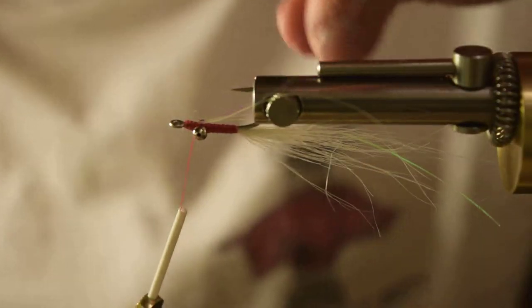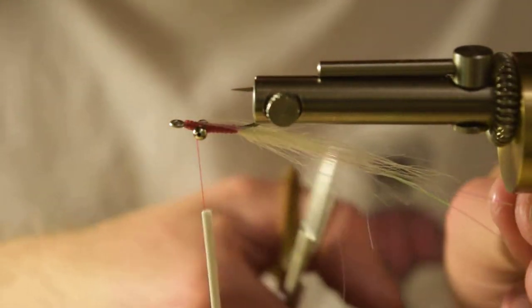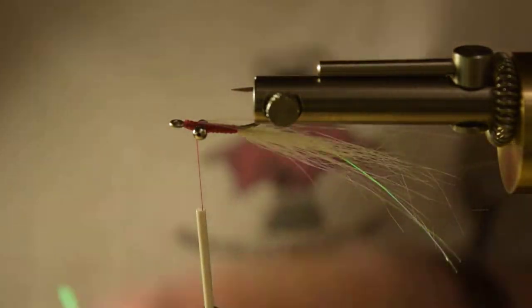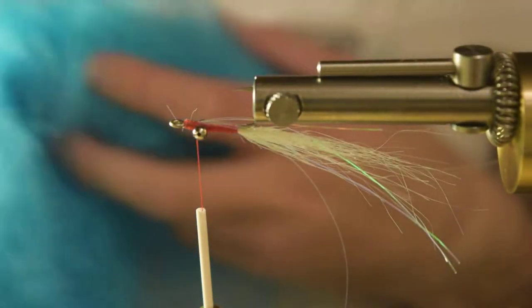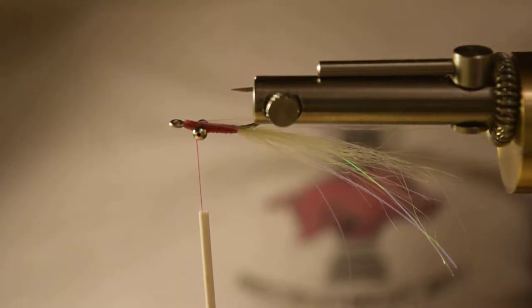We're going to get that to kind of splay out evenly around that hook point. Pull that back and I usually cut it about the same length as the craft fur. You can always come back and trim that later. Now we're almost done. Come in with some blue craft fur for the top wing.